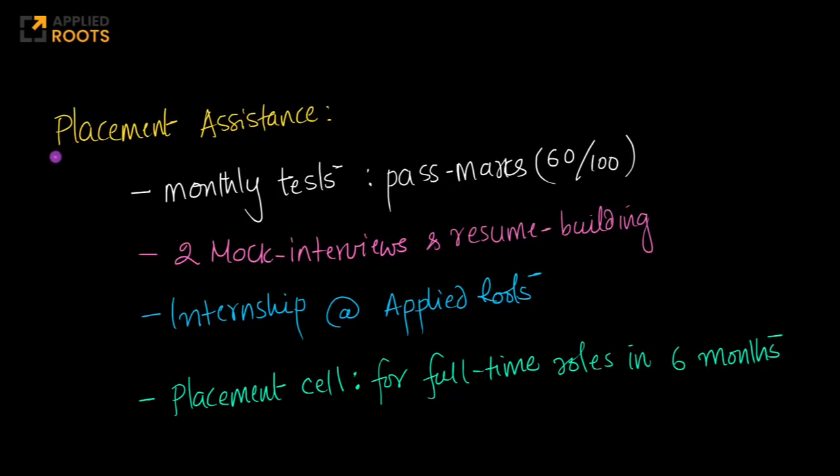As far as the placement assistance is concerned, every month we will have a test which constitutes all of the concepts in programming, data structures, and algorithms that you have learned in this program. The clearing marks or the pass marks in this would be 60 out of 100. All the students who obtain 60 or more marks in these monthly tests—most of these monthly tests are designed keeping in mind the interviews and problems that you need to solve at product-based companies and product-based startups.